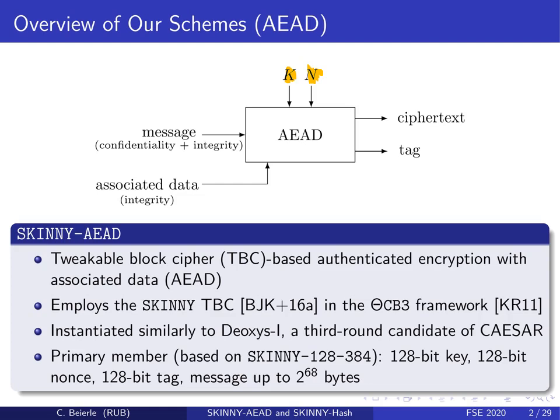Our scheme, called Skinny AEAD, is a tweakable block cipher-based Authenticated Encryption with Associated Data, which employs the well-known Skinny tweakable block cipher from Crypto 2016 in a TETA-CB3 framework, which is the tweakable version of the OCB framework, introduced in 2011. Our particular instance is very similar to Deoxys-I, which is a third-round candidate of the CAESAR competition. Our primary member is based on Skinny-128-384 and takes a 128-bit key, 128-bit nonce, outputs a 128-bit tag, and allows processing a message of up to 2^68 bytes.